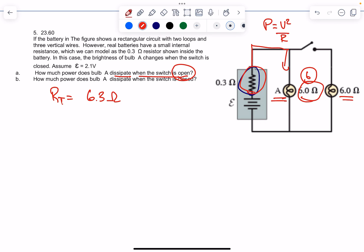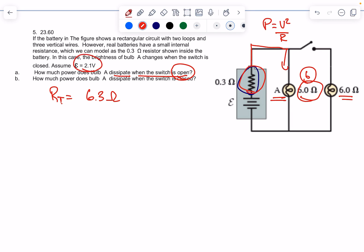We know the total voltage is 2.1. If V equals IR, in a series circuit the voltages drop across the different resistors—it's not consistent—but the current stays the same. So I want to solve for the current: 2.1 equals I times 6.3.